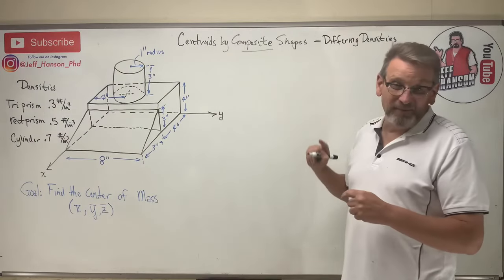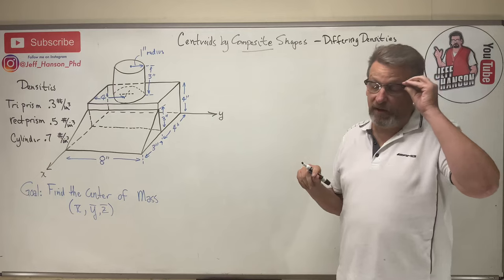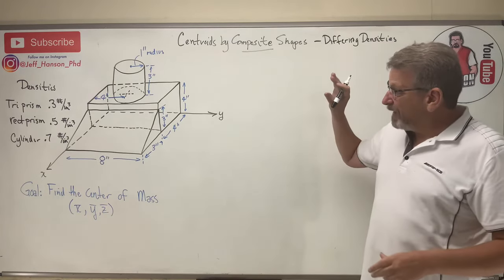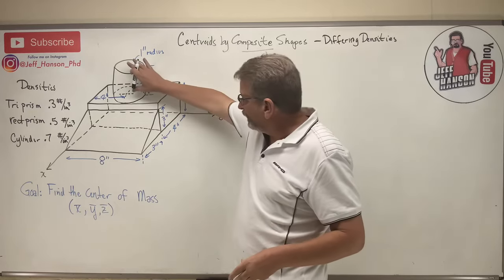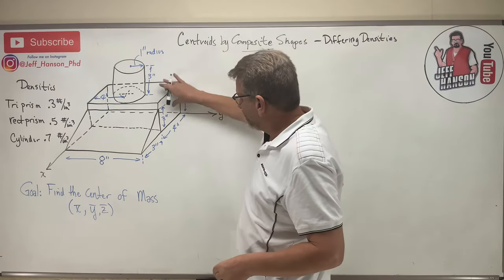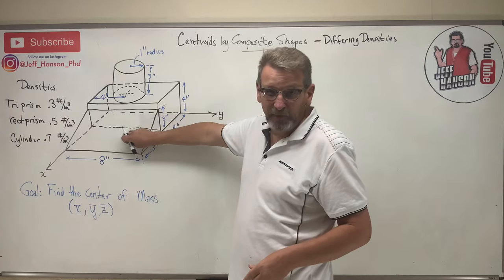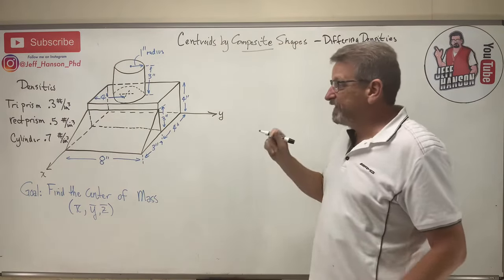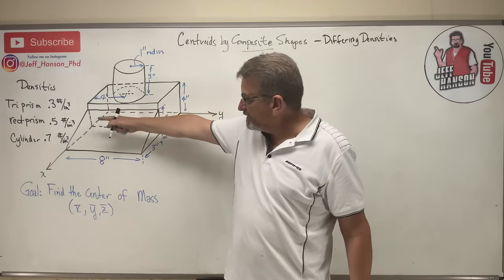We've got another centroid by composite shapes video here for you, and this one's a little bit different because it's made out of three different materials. The cylinder is one material, this rectangular prism is one material, and this triangular prism here another material.